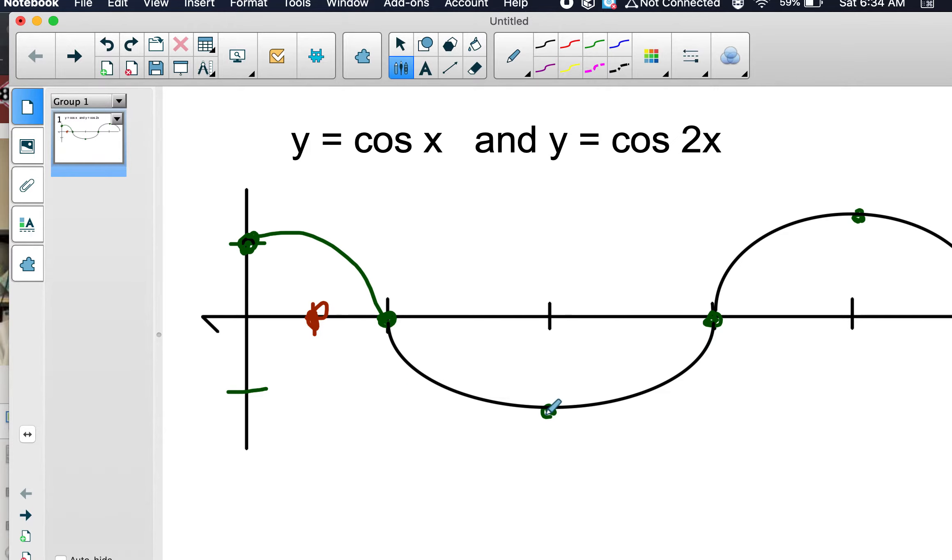It used to take 180 degrees to get all the way to negative 1, divide that by 2, it happens here at 90. It used to take 270 degrees to curve back up to 0, divide that by 2. We now have a new line, this now happens at 135.